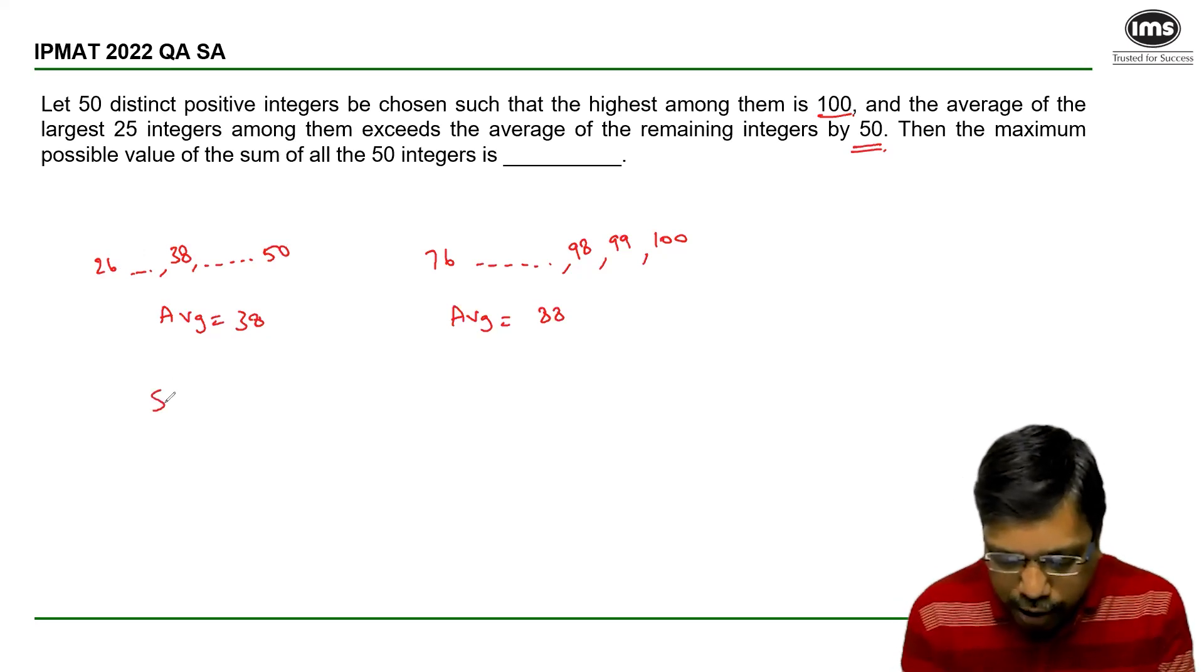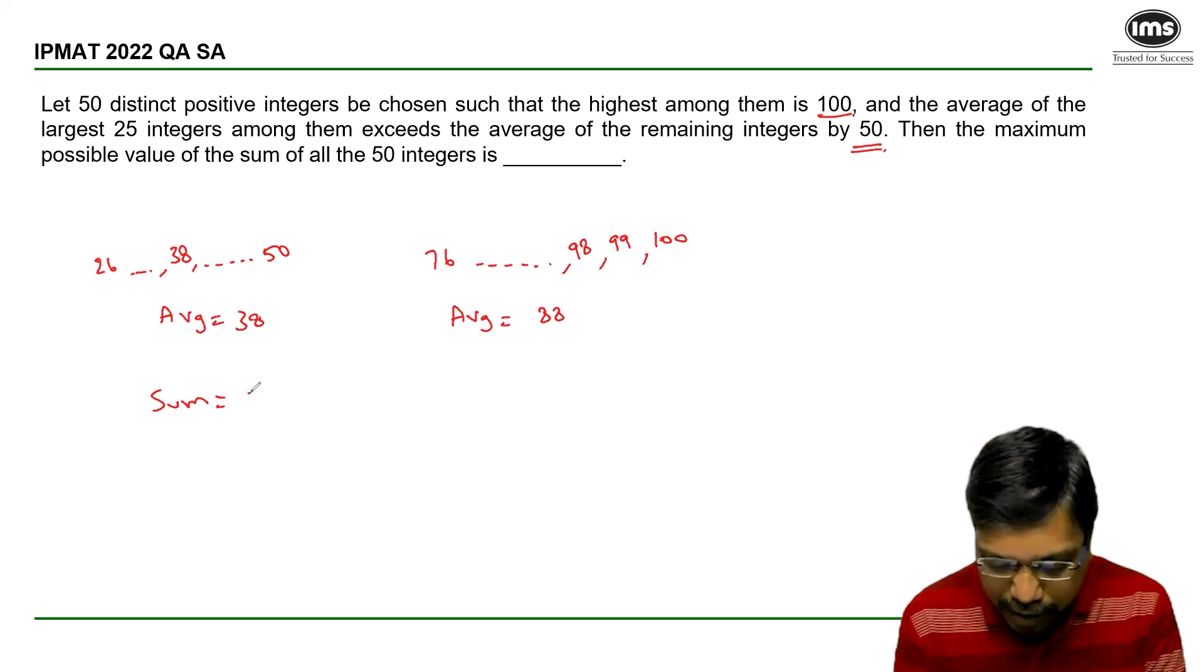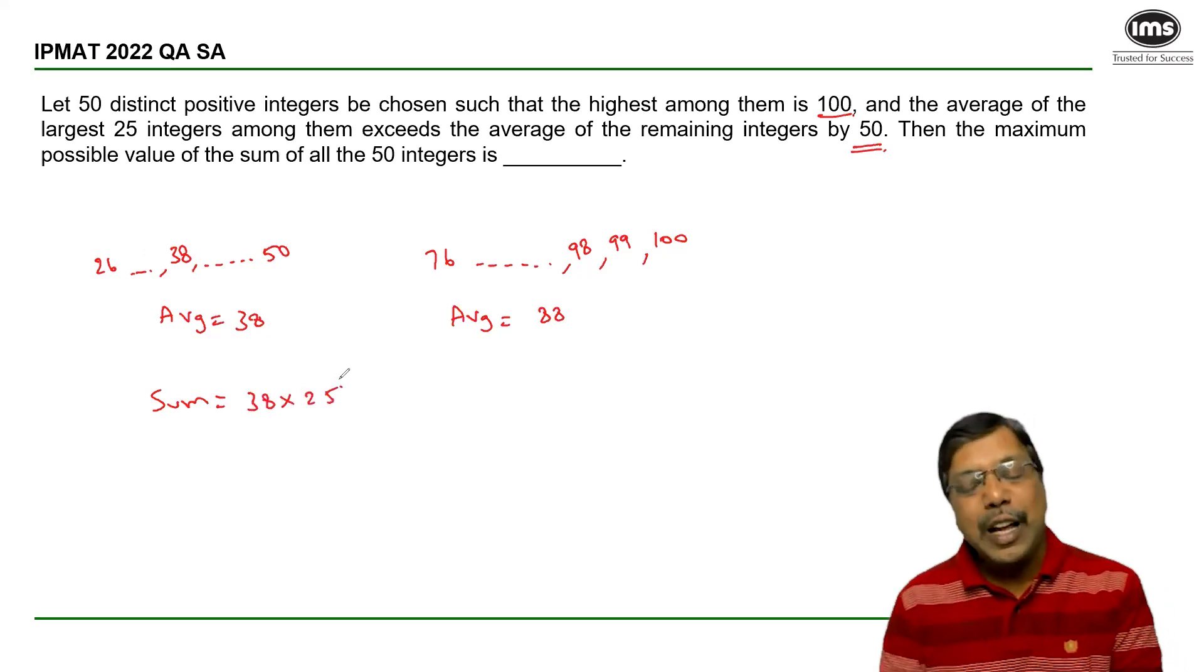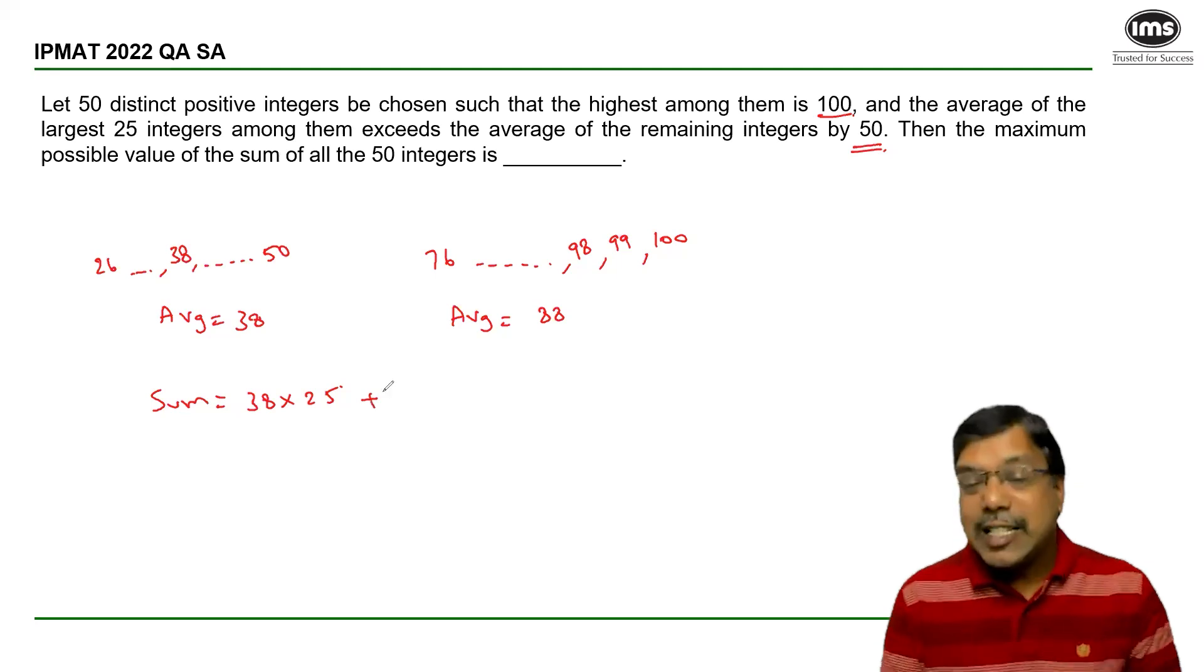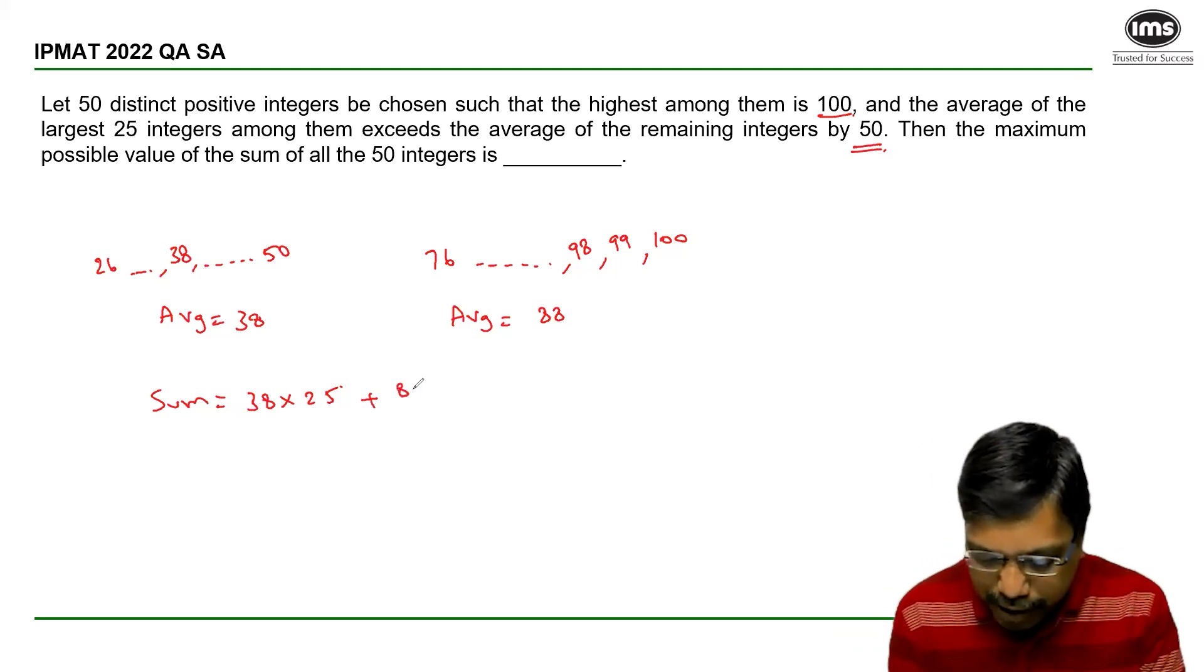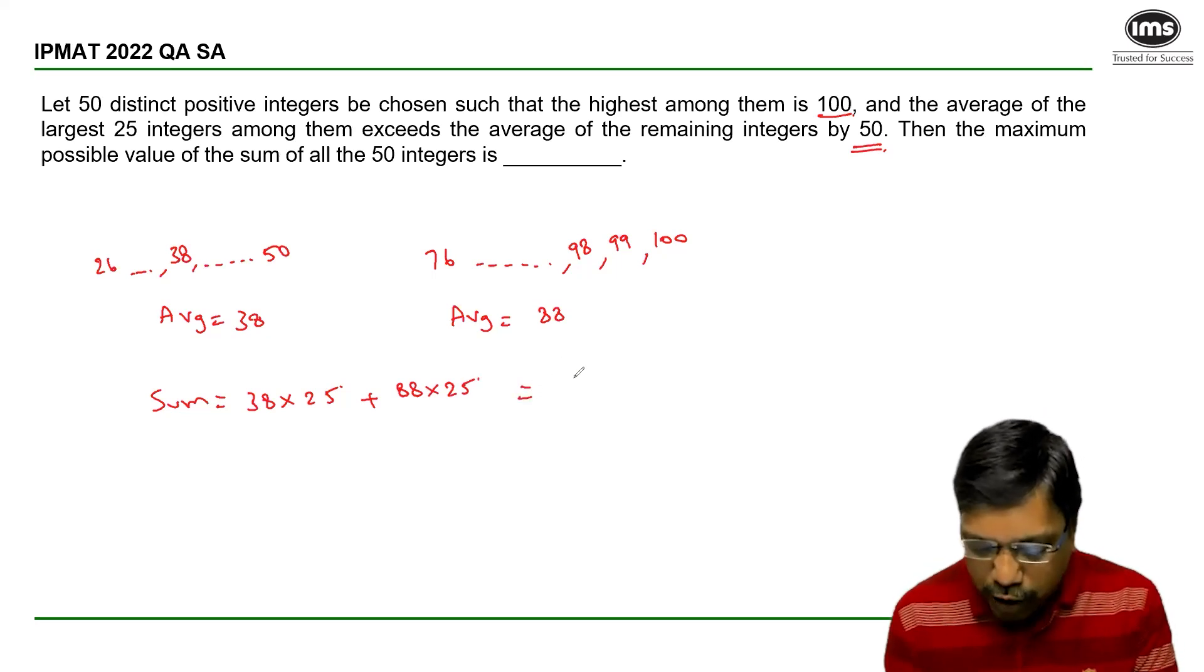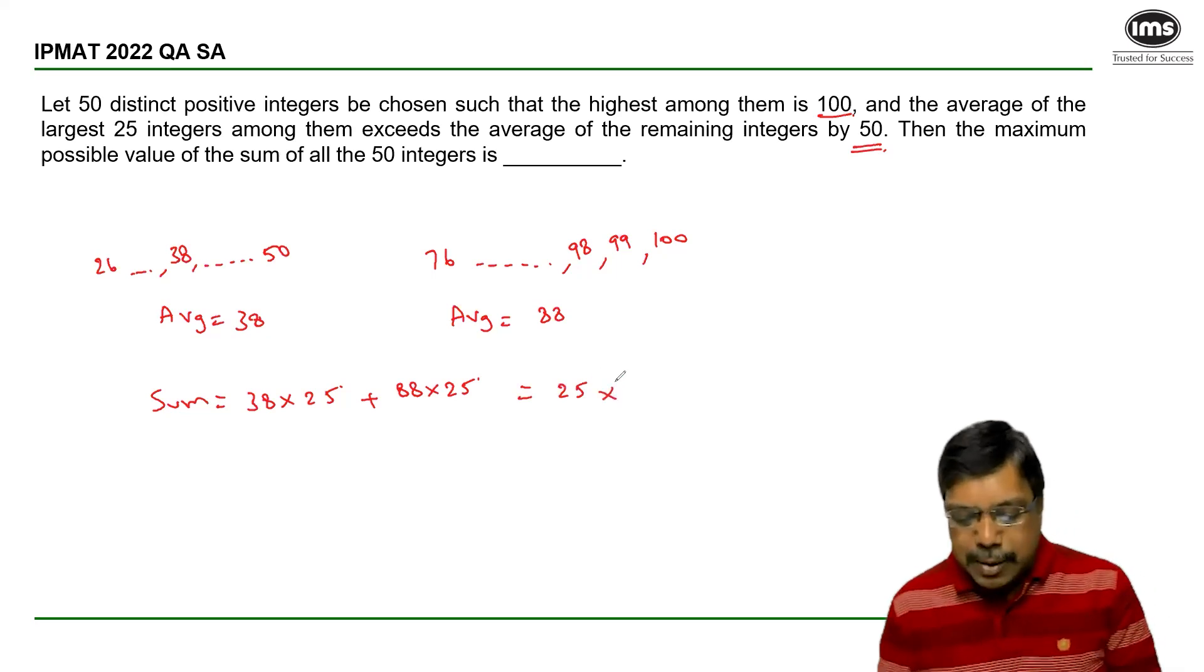What is the sum of the first 25 integers? Average times number of integers. And the sum of the remaining 25 integers is average times number of integers, which is equal to 25 × (88 + 38).